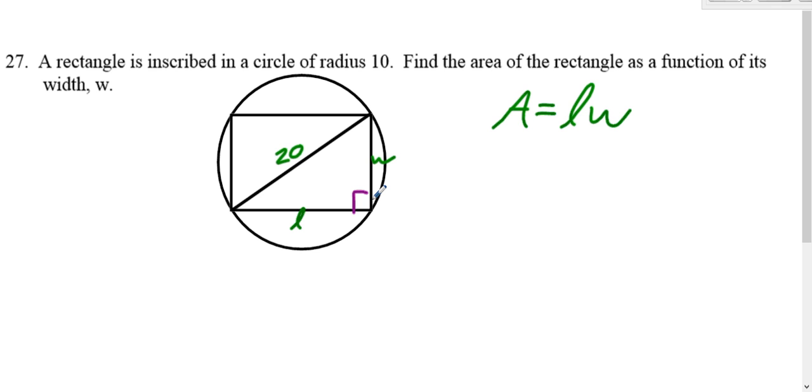So since it's a right triangle, you can use Pythagorean Theorem. A squared plus B squared equals C squared, which would be L squared plus W squared equals 20 squared, or 400.